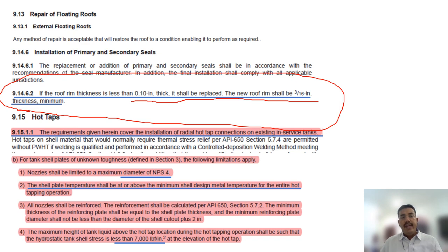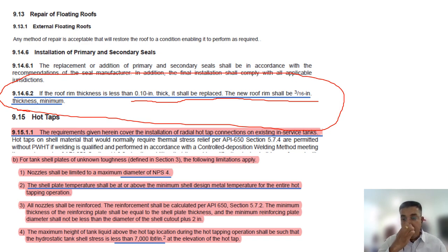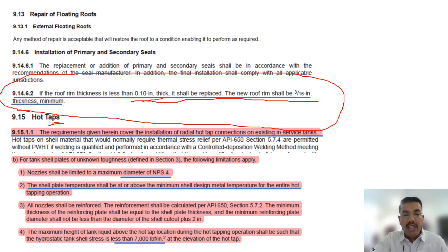For cathodic protection: if CP is installed under the existing tank, consideration shall be given to removing the entire bottom and unused deadwood cells to prevent shielding of CP current for the new bottom. For roof repair: if the roof thickness is less than 0.1 inch it shall be replaced. New roof seams shall be a minimum of 3/16 inch thickness. For API 650, minimum thickness for shell is 5 mm, bottom is 6 mm, and roof is 5 mm; for API 653, roof and shell minimum is 2.5 mm, and bottom is 2.3 mm (0.09 inch).